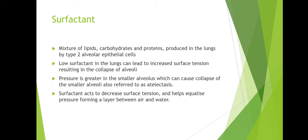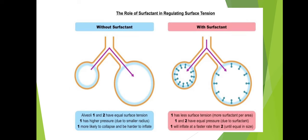Basically, in your alveolus you have a thin layer of surfactant that separates the air from the water, which decreases the surface tension and stops the lungs from collapsing. If babies don't have enough surfactant or there isn't adequate production, you can get that increased surface tension. Looking at the two pictures here — on the left in blue, you've got your alveoli: a smaller one and a larger one. They have equal surface tension but no surfactant. The smaller one is under higher pressure due to its smaller radius and is more likely to collapse and be harder to inflate. The best way to think of this is like a small balloon and a larger balloon — putting the same amount of air into both, the smaller balloon would be under greater tension or pressure.